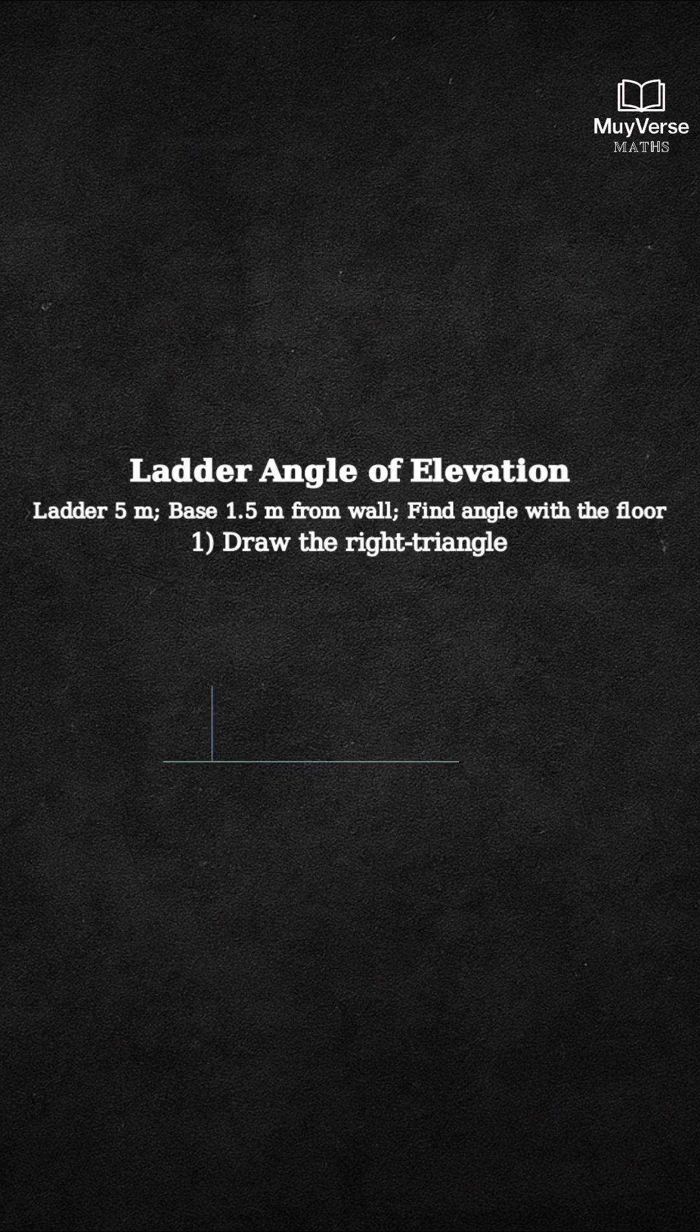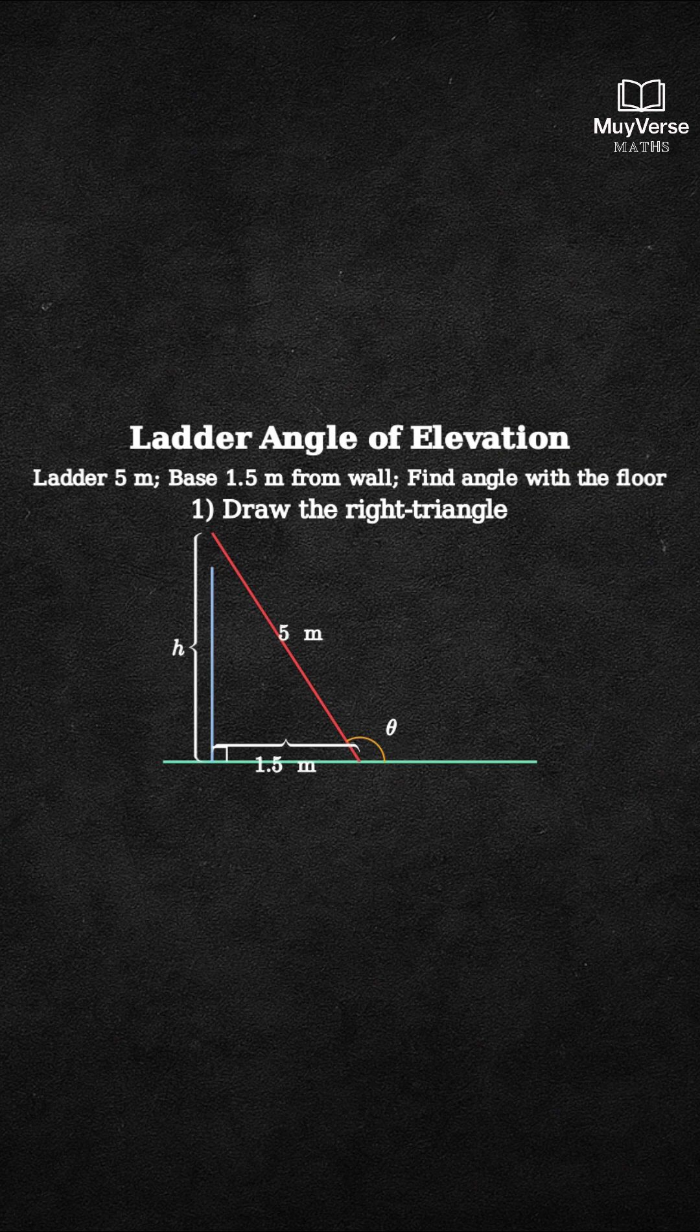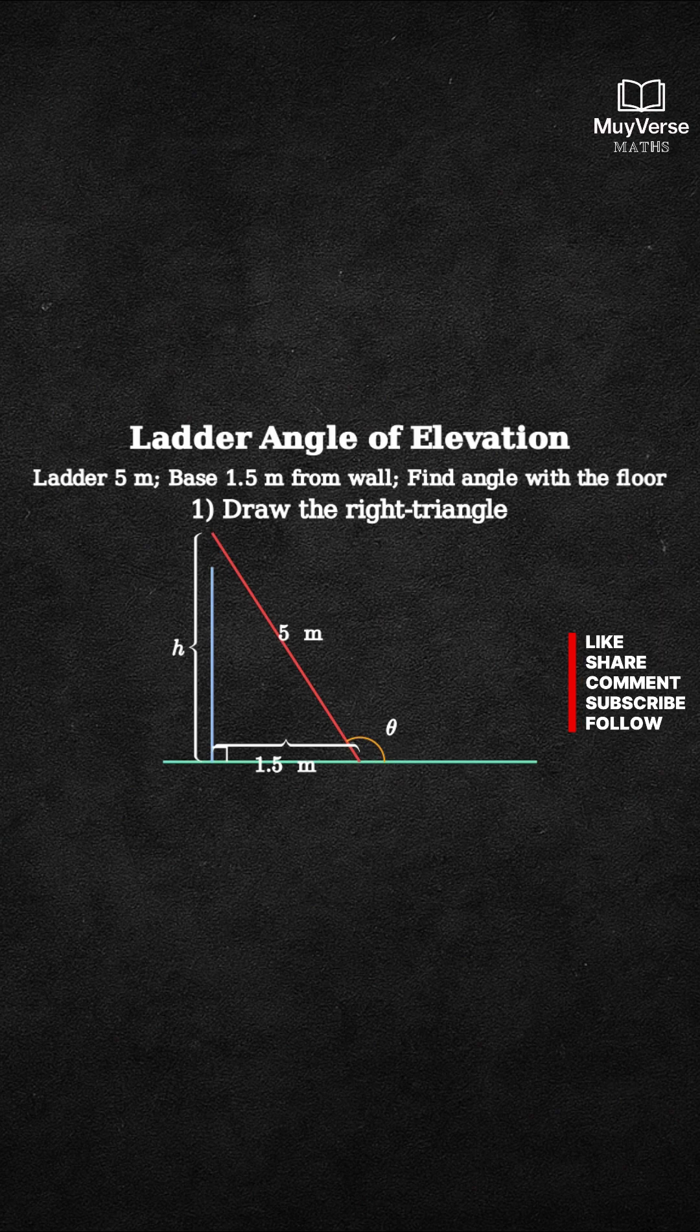Step 1. Draw the right triangle model. The floor is horizontal, the wall is vertical, and the ladder is the hypotenuse. We will label the base as 1.5 meters, the ladder as 5 meters, the height as h, and the angle with the floor as theta.